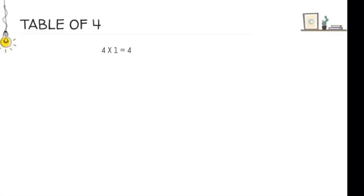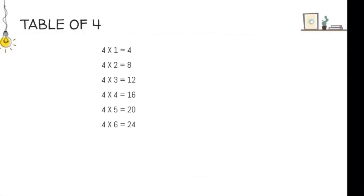4 1's are 4. 4 2's are 8. 4 3's are 12. 4 4's are 16. 4 5's are 20. 4 6's are 24. 4 7's are 28. 4 8's are 32. 4 9's are 36. And 4 10's are 40. The next one is table of 5.